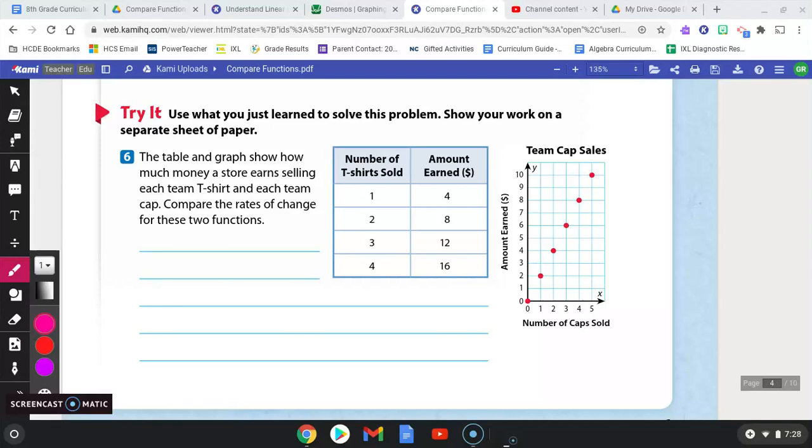Let's use what we know to compare functions. So the table and the graph show how much money a store earns selling each team t-shirt and each team cap. Compare the rates of change for these two functions.